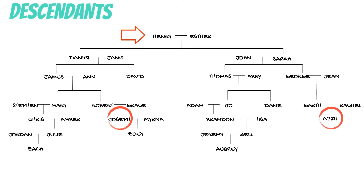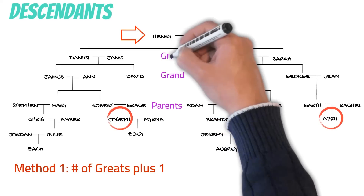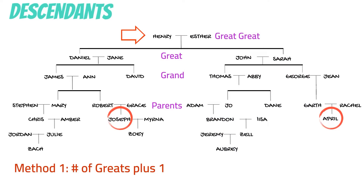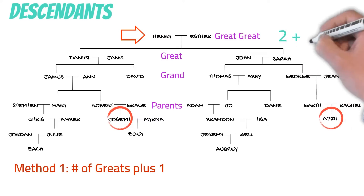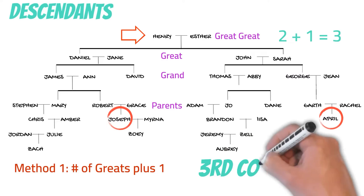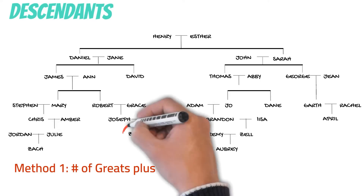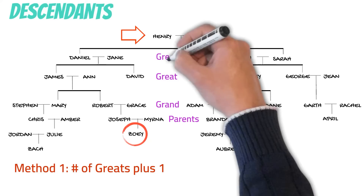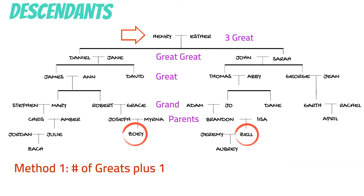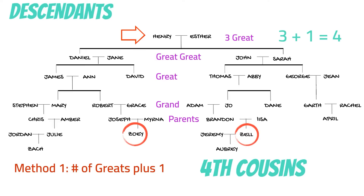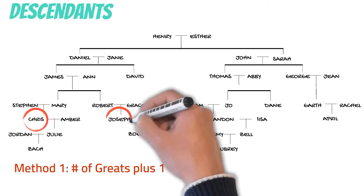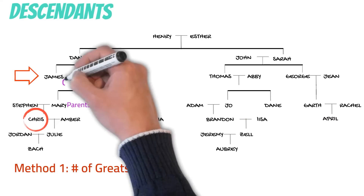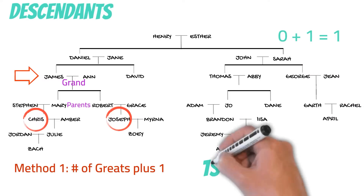Next, there are two methods for determining cousin relationships. The first method is the number of greats plus one. We determine the number of great-grandparents that the most recent common ancestor is. In this case, two great-grandparents, so two greats plus one equals three — Joseph and April are third cousins. Another example: Zoe and Zell — their most recent common ancestor is their third great-grandparents, so three plus one equals four, making them fourth cousins. One more: Chris and Joseph — their most recent common ancestor is their grandparent James and Ann, so zero greats plus one equals one — they're first cousins.